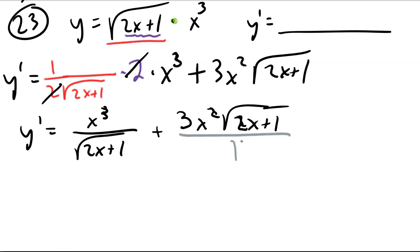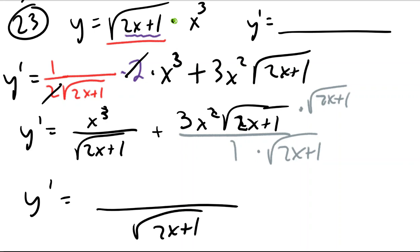Right now this guy has a denominator of one. I need him to have a denominator of square root of 2x plus 1. But you can't multiply the denominator by something without multiplying the numerator and expect it to stay the same. The idea of getting a common denominator allows me to shove all of this together.